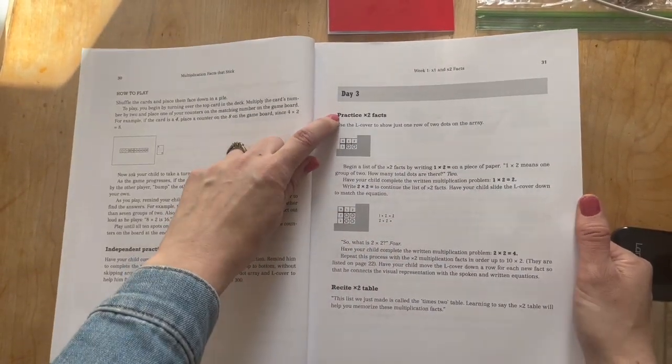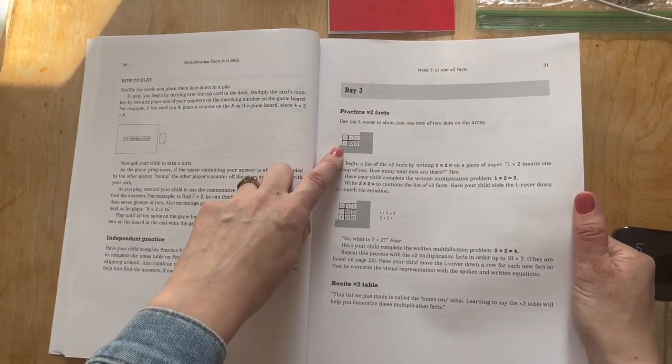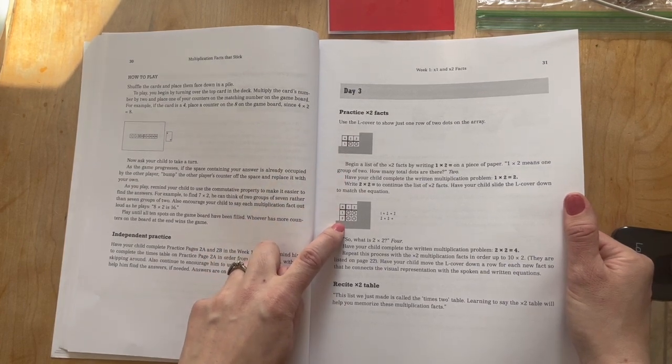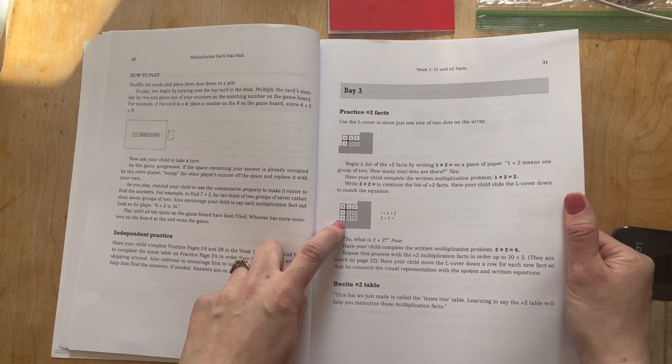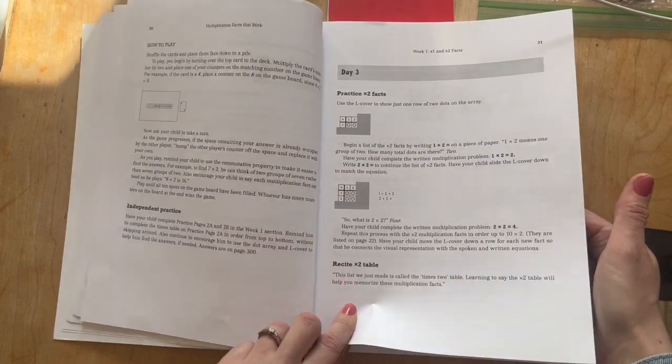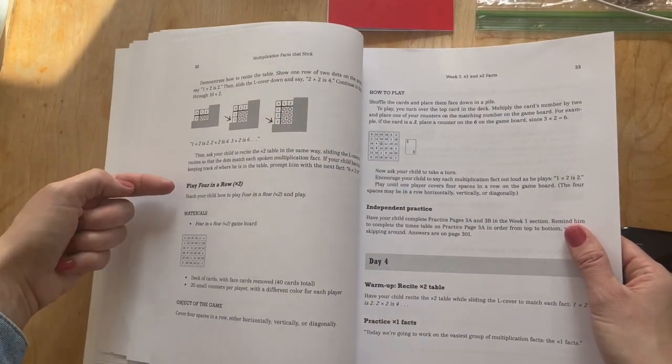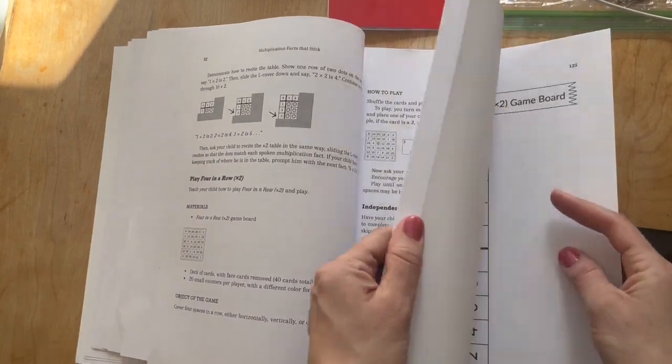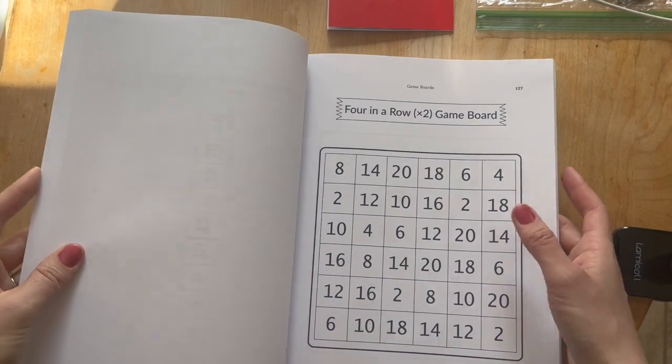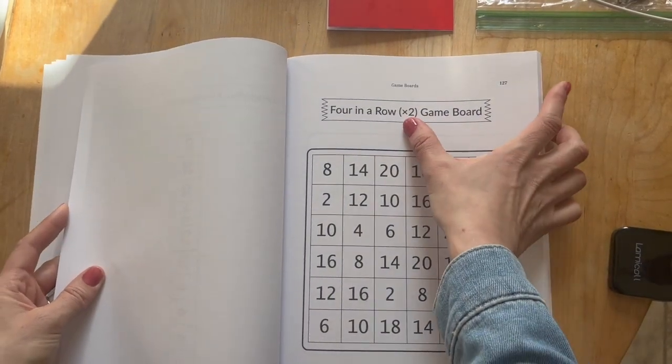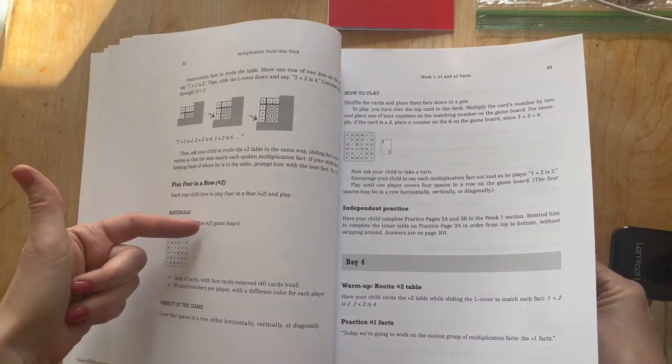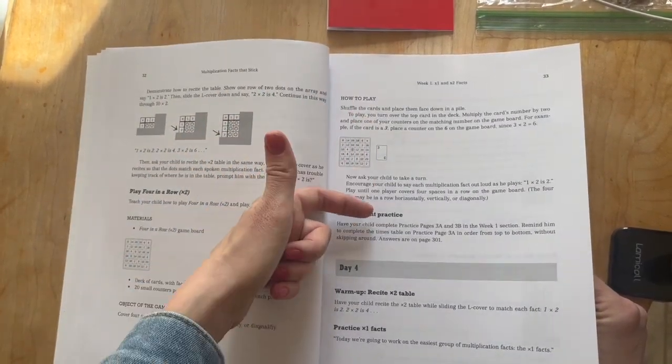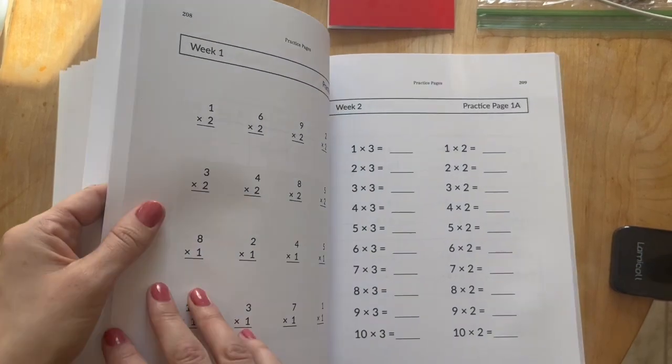Coming through day three, you're going to practice the times two facts. Use the L cover to show just one row of the two dots on the array, going down, showing the two times two facts, and recite the times two tables. Then you're going to play four in a row for the times two tables. Materials you'll need the four in a row board game. So we'll come back here and we'll get the four in a row board game in the back with the times two tables. And you'll need a deck of cards and 20 small counters per player with a different color for each player. It tells you the directions how to play that. And then they have their worksheet, which would be in the back.